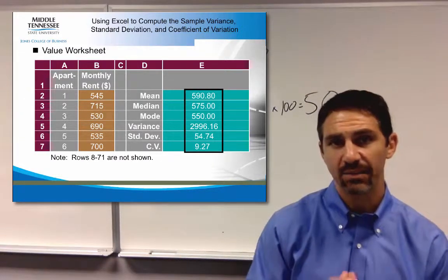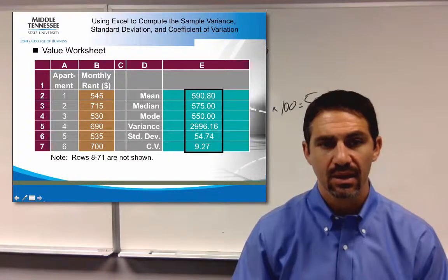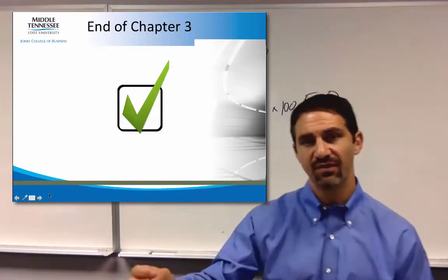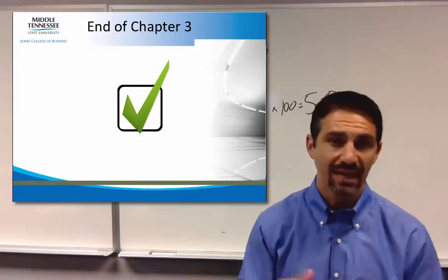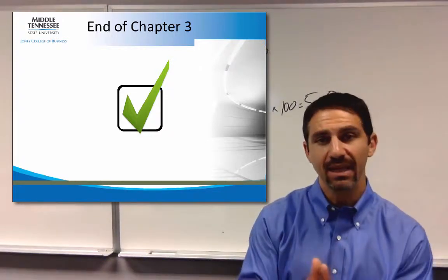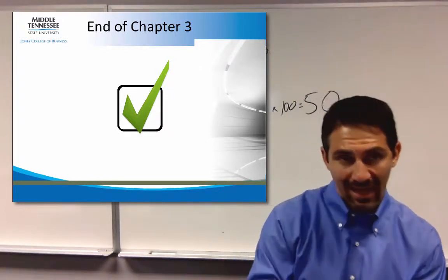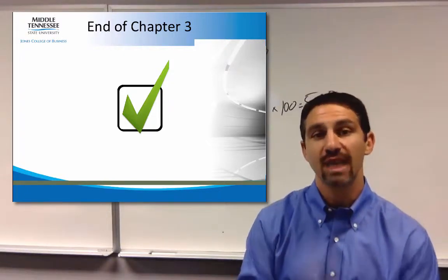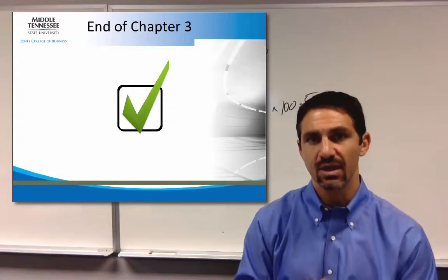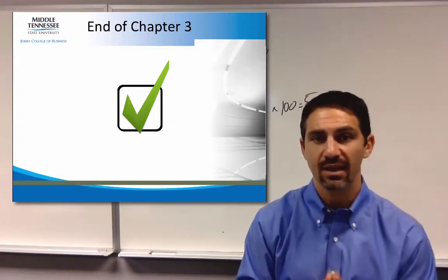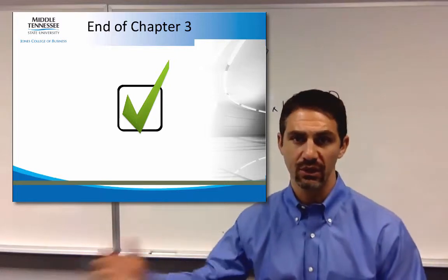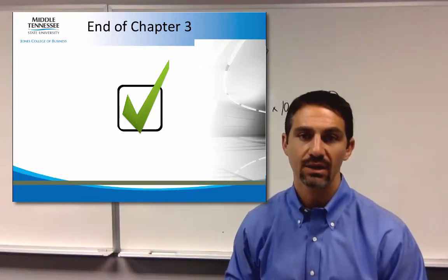Now we're going to start getting into probability in our next chapter. That really becomes important for chapters 5 and 6 because we're then going to look at mean and standard deviation as it relates to probability, using all of those together to come up with real business decisions.